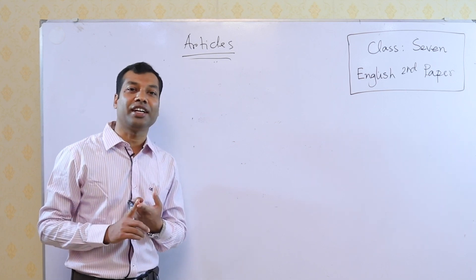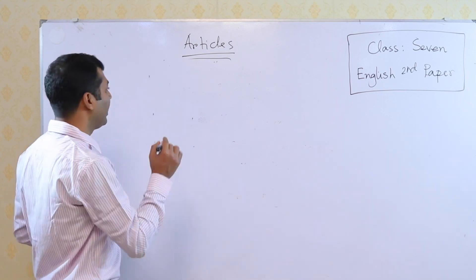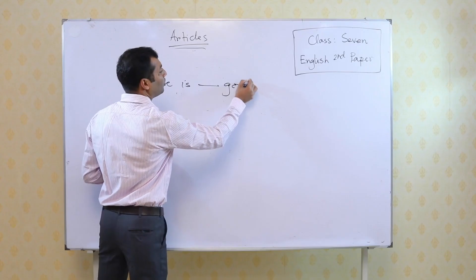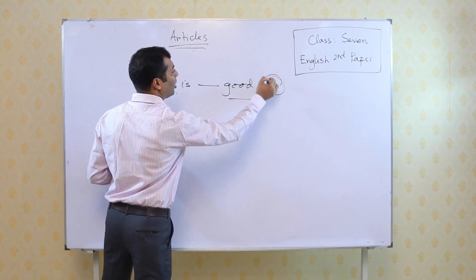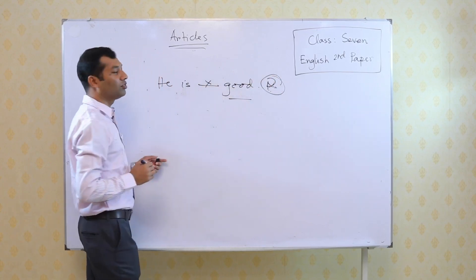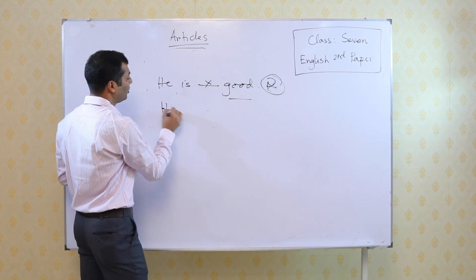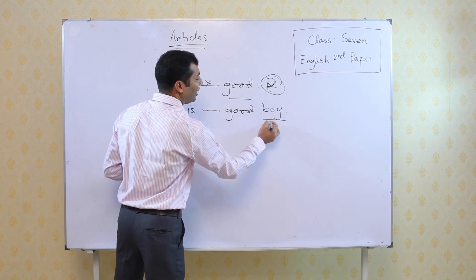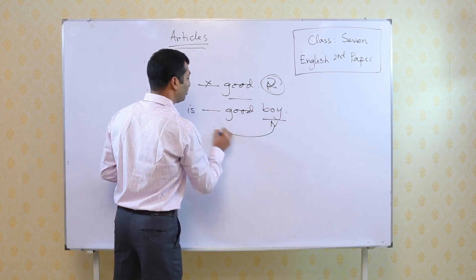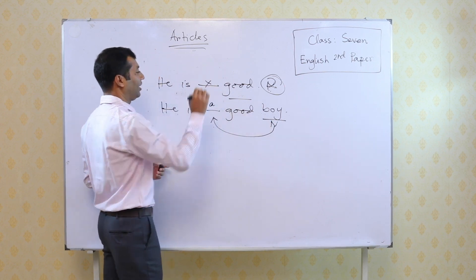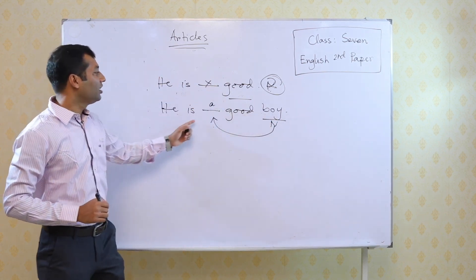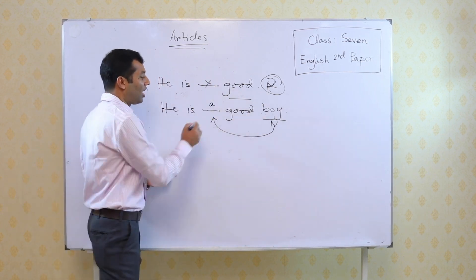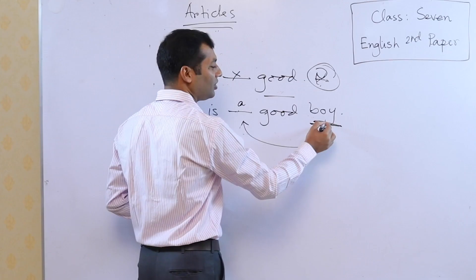For example, 'he is good' — is there any noun? There is no noun, so it will be a cross. But if I use 'he is dash good boy', you can see here boy is the noun. Only for this we have to use an article — that is 'a'. So 'he is good' has no article, and 'he is a good boy' — we have used the article 'a' here. So the article is directly connected with the noun.